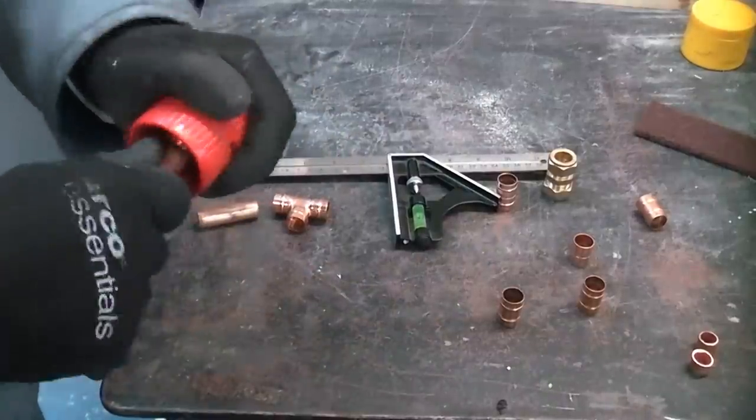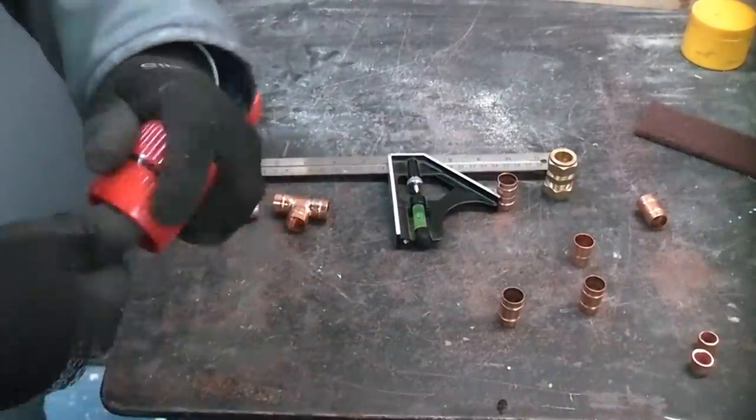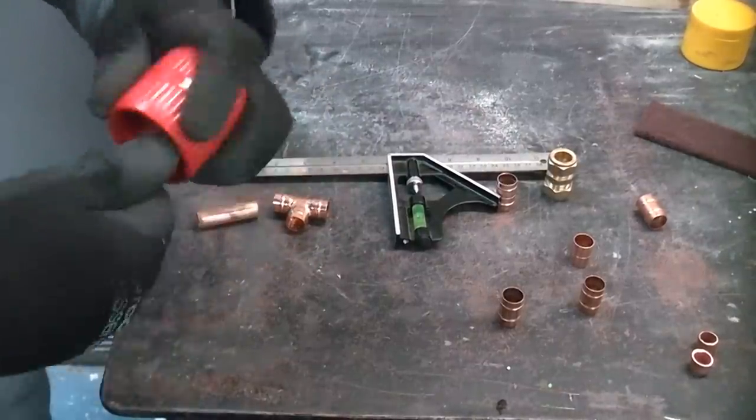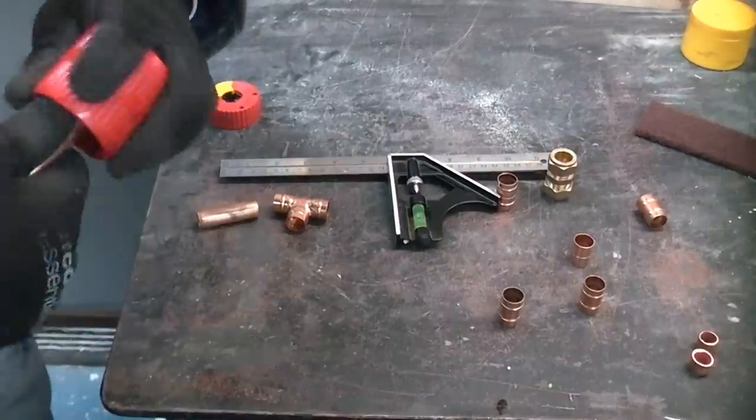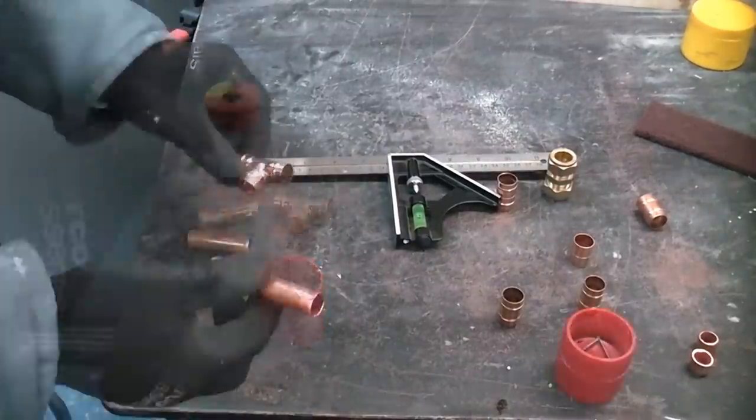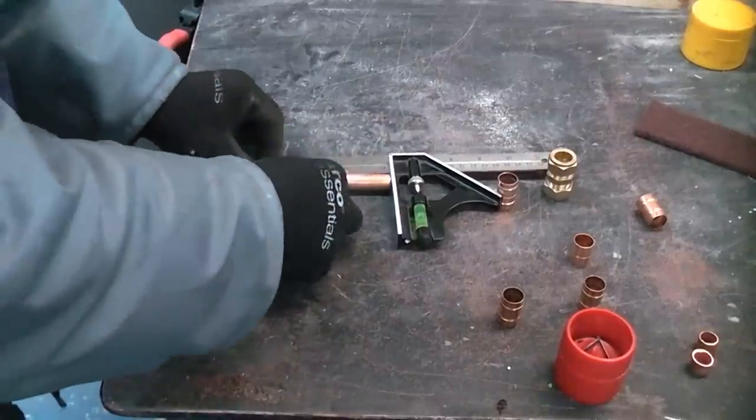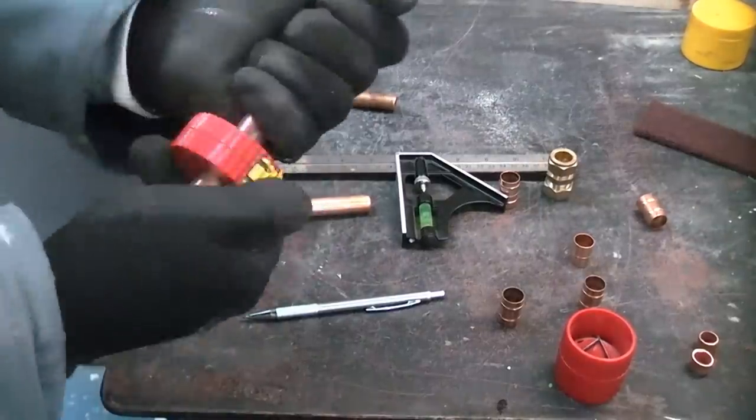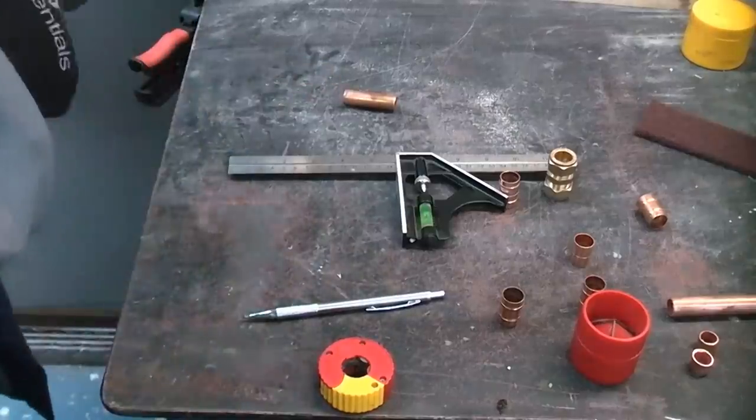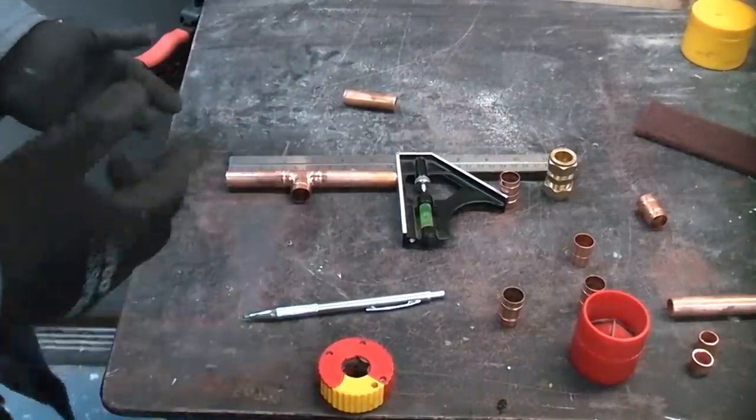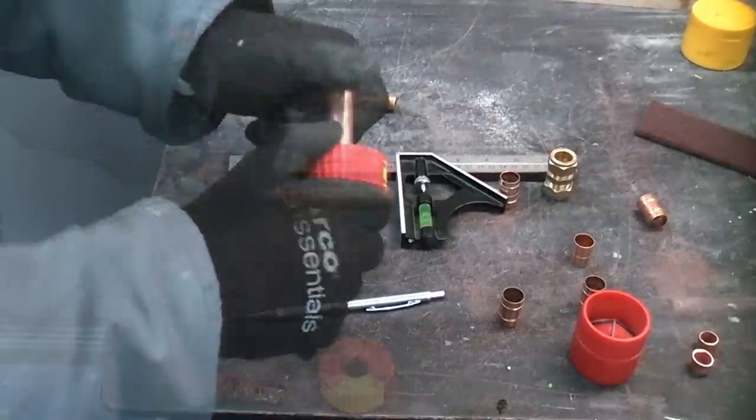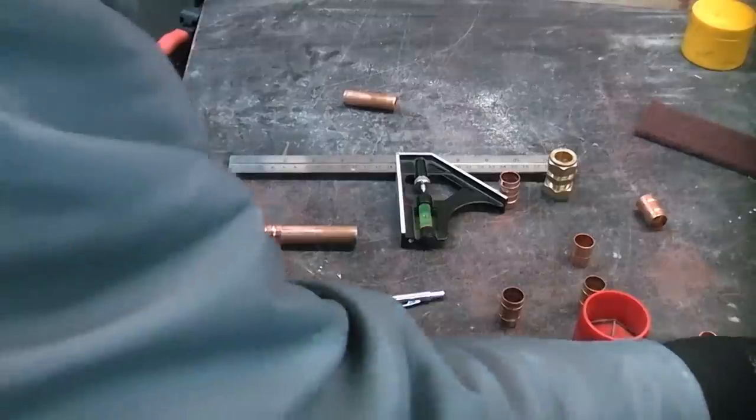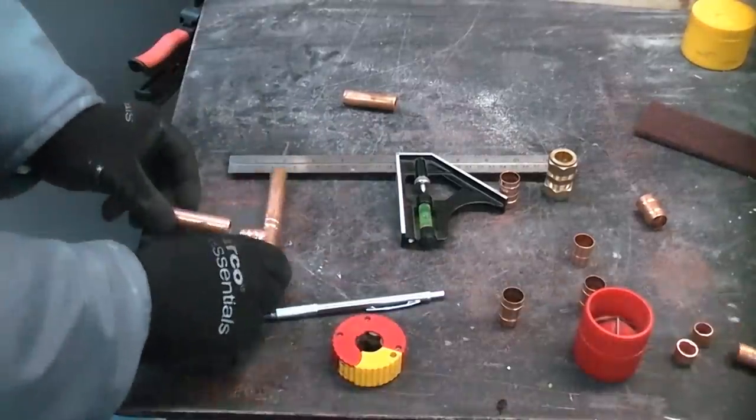Every time I make a cut with the pipe slicer I'm going to deburr it using the deburring tool. So we can now push that part into the fitting and I'll cut that to length with the pipe slicer. I can now push that in there and see that we've got the exact correct length. So I'm now cutting the last piece and that is going to go in that part of the T.